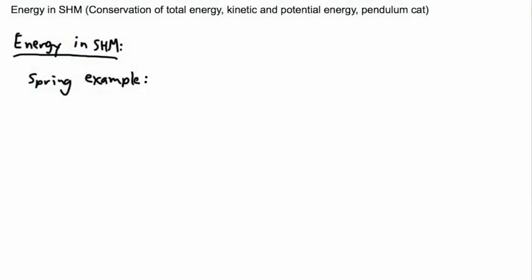Let's look at energy within simple harmonic motion. We're going to look at conservation of energy, kinetic and potential energy, and we'll do an example with a pendulum. We can definitely do that. The very first thing is to look at an example — we've done this before, this sort of spring example. The idea is if we have a spring going back and forth, we have some equations we can use.